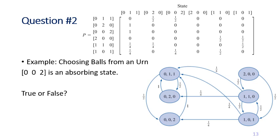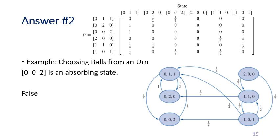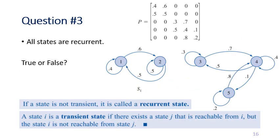Still from the same example, the next statement says: (0,0,2) is an absorbing state — is this true or false? The answer is false. State (0,0,2) is not an absorbing state because the probability of transitioning from (0,0,2) to itself is 0, which does not satisfy the definition. To be an absorbing state, the probability of transitioning from a state to itself must equal 1.